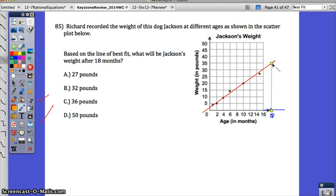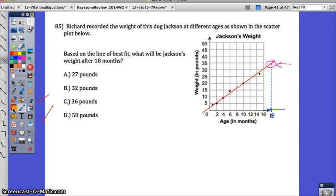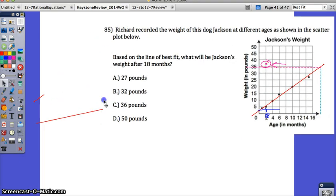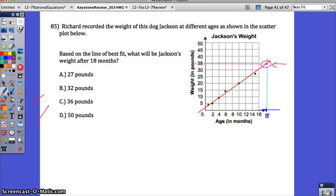Once you hit your line of best fit, trace over at that point. Here's where it's intersecting. Trace over to your y-axis to see what the weight is on that level. Tracing over from this point, I feel like my weight is right around 35, so I think the closest answer would be 36 pounds. C would be the best answer in this case.